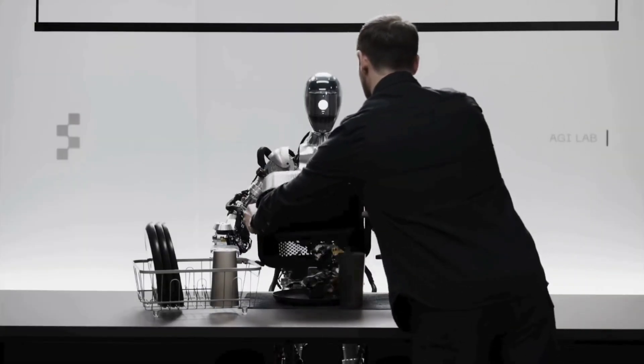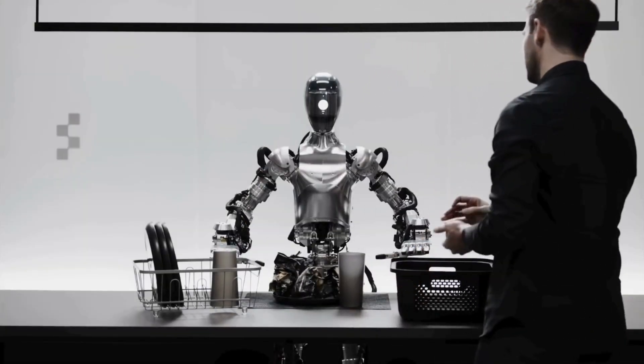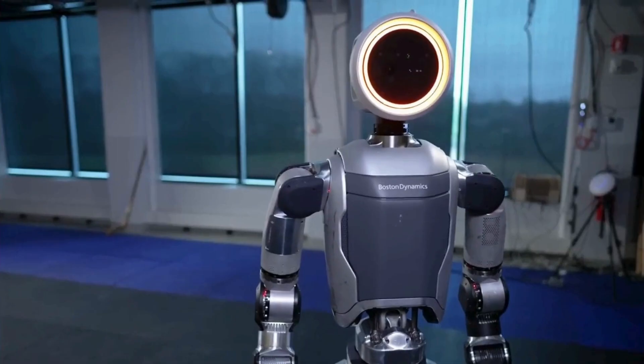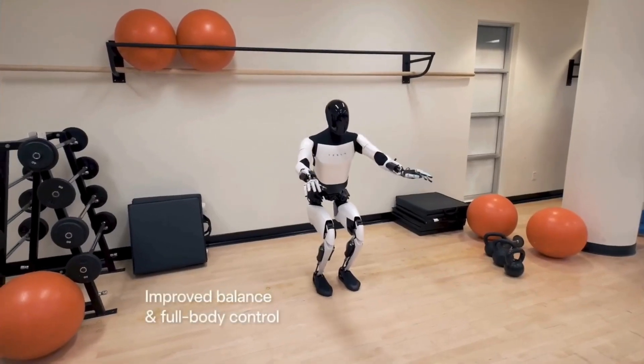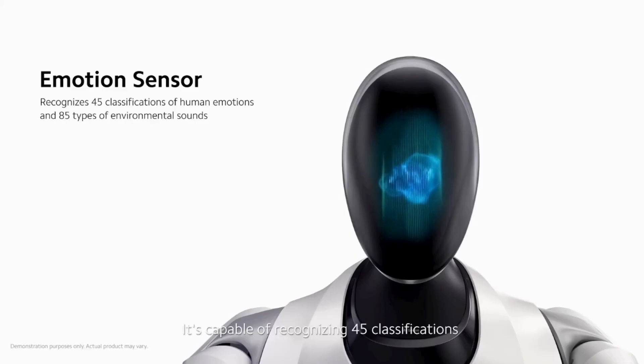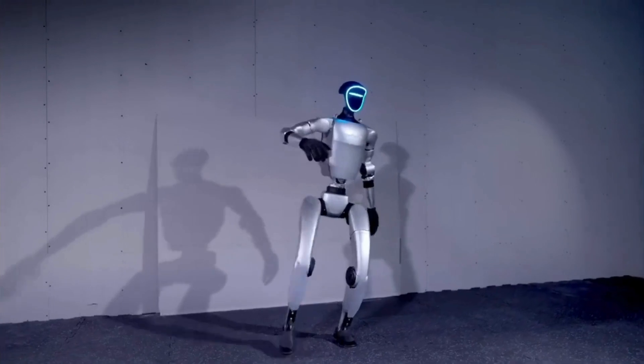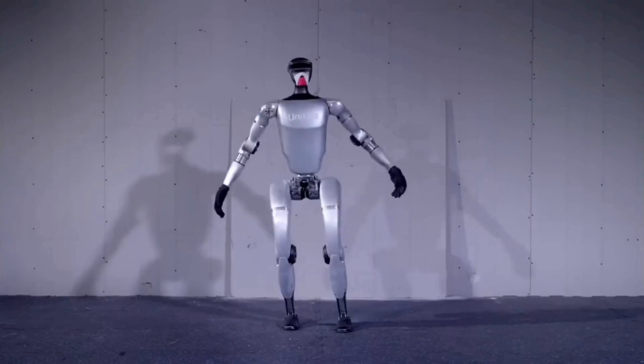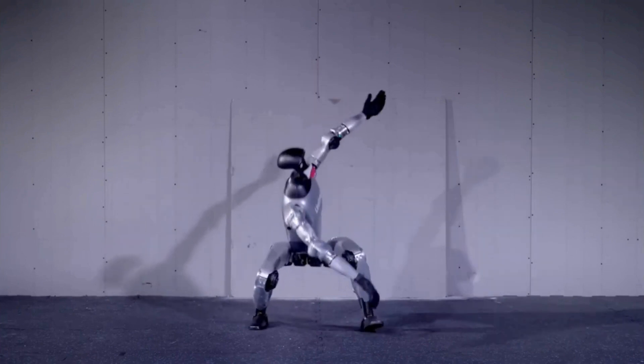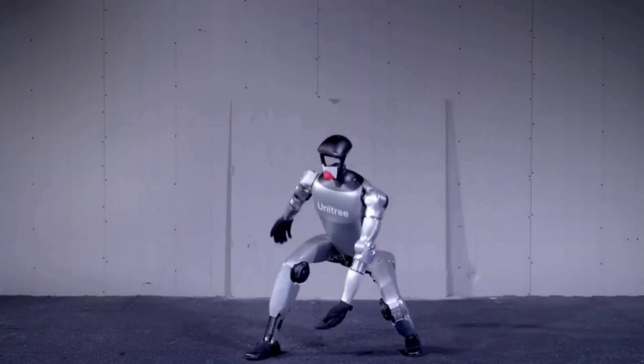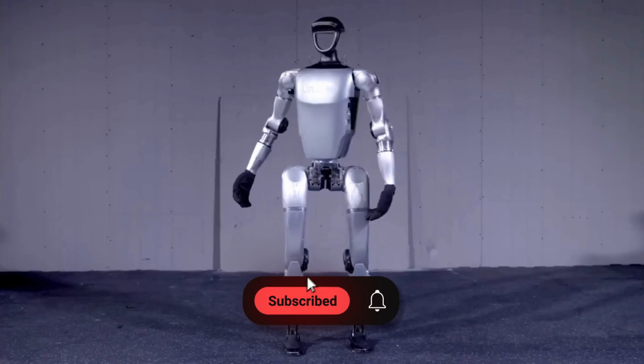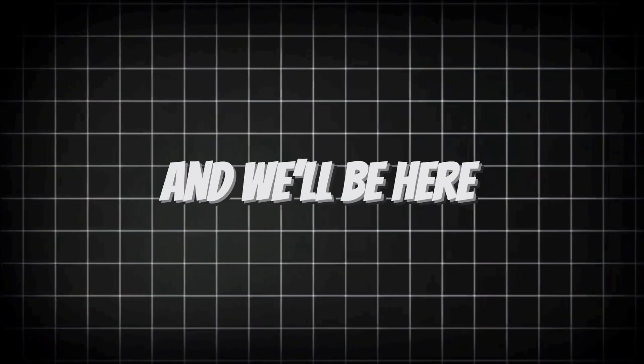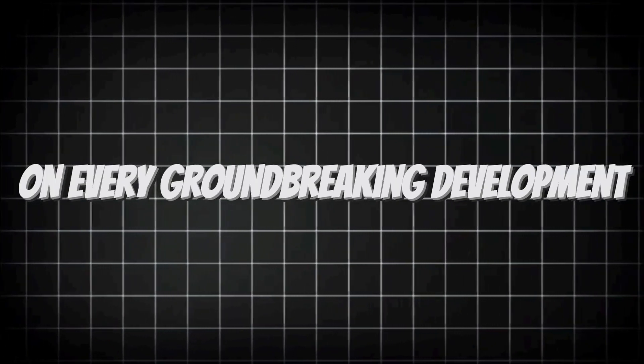As we explore these incredible humanoid robots, it's clear that each one brings unique capabilities to the table. From the advanced AI of Figure 2 to the agility of Atlas, the industrial potential of Tesla Optimus Gen 2, the emotional intelligence of Xiaomi Cyber One, and the speed of Unitree G1, the future of robotics is bright and full of possibilities. If you found this exploration of the top humanoid robots for 2024 fascinating, don't forget to like and subscribe for more content on the latest in AI and technology. The world of robotics is evolving, and we'll be here to keep you updated on every groundbreaking development.